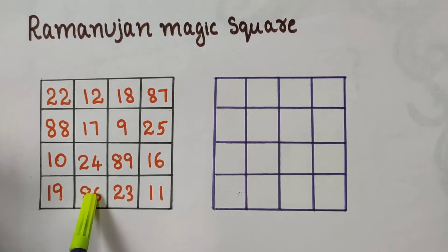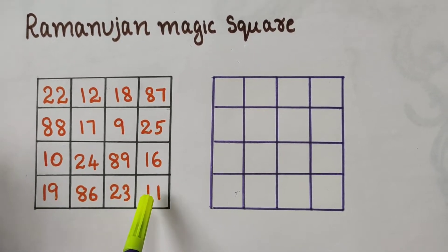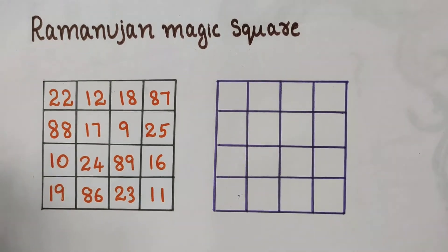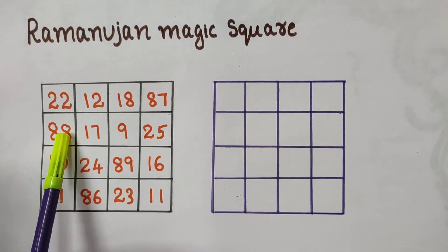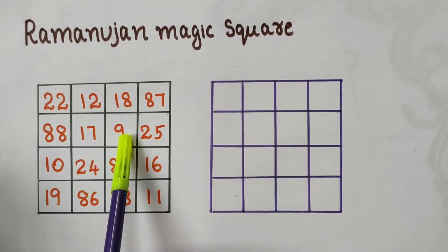The square containing 10, 24, 19, 86 - the sum of these numbers is 139. 89, 16, 23, and 11 - the sum of these numbers is 139. Now consider the square containing 88, 17, 10, and 24. The sum of these numbers is 139.